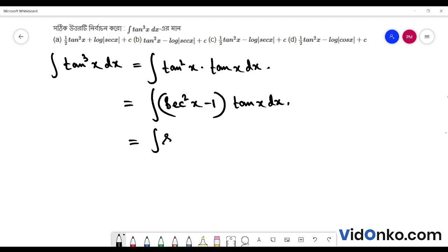This equals the integral of sec squared x times tan x dx minus the integral of tan x dx.